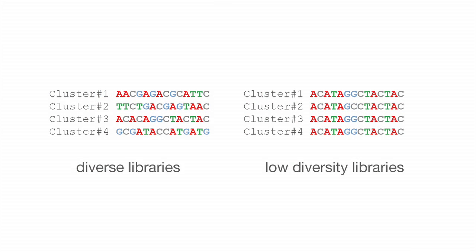This figure shows the sequence generated from four separate clusters in both the diverse and low diversity library. Highlighting cycle four, we can see that each base is represented in this cycle in the diverse library, contrary to the low diversity library where only the T base is present.